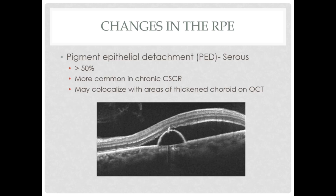Changes in the RPE: first is pigment epithelial detachment. PED in CSCR is usually a serous PED, seen in more than 50% of cases. Studies show a variability of 55 to even 100% presence of PED in CSCR. It is more common in chronic cases and can be present inside or outside the SRF. It usually co-localizes with areas of thickened choroid, and in active cases, PED can be present at the leakage site.